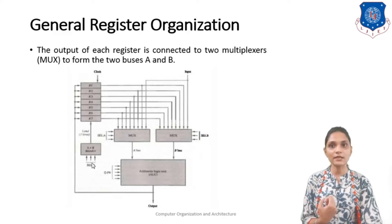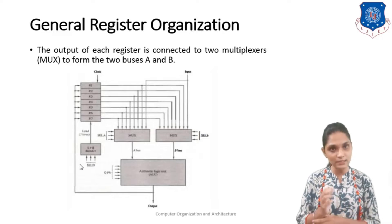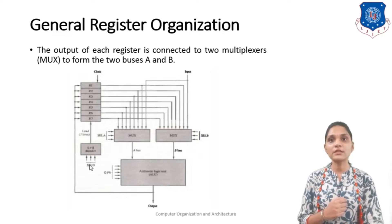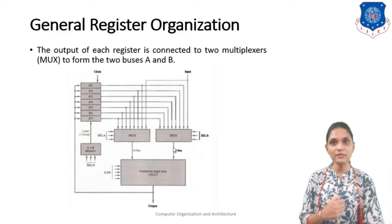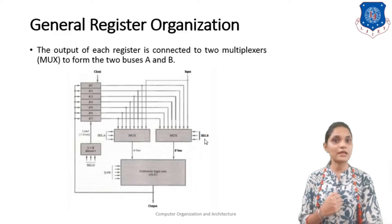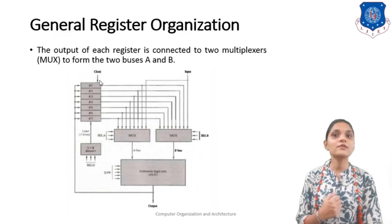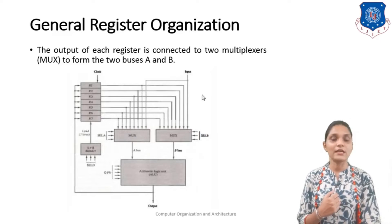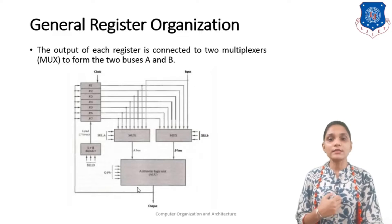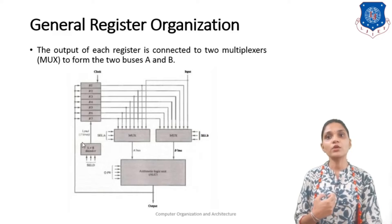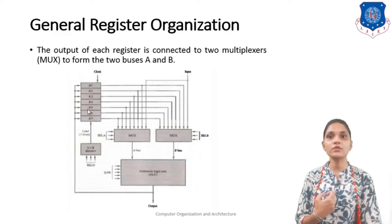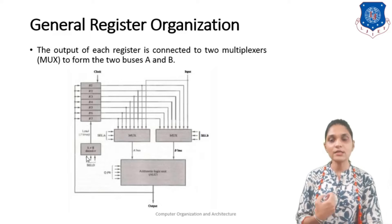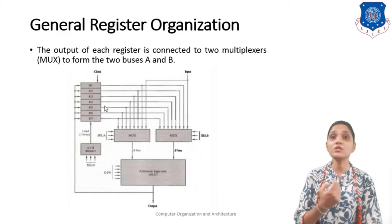This 3-to-8 decoder has three selection lines, represented as Select D (SELD). MUX A has a selection line SELA and MUX B has a selection line SELB. The output of each and every register is connected to this MUX, and the 8th input of the MUX comes from an input device. For storing the result from the A bus, we use this 3-to-8 decoder, and according to the decoder, one of the register inputs is selected and the result is stored accordingly.